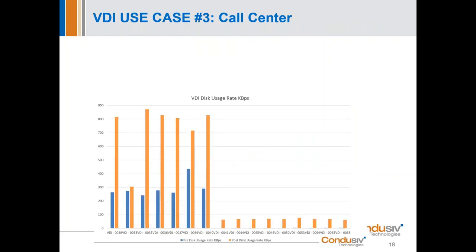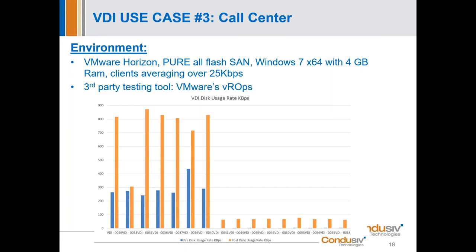Let's take a look at another use case. This is a Horizon environment using all-Pure flash type storage, and again we tested using vROPS. These numbers are from a Fortune 500 company — you'd probably recognize it as a household cable TV company. These were samplings taken from their call center. You can see the data usage rate is significantly better, more than double in most cases, with Velocity than without.